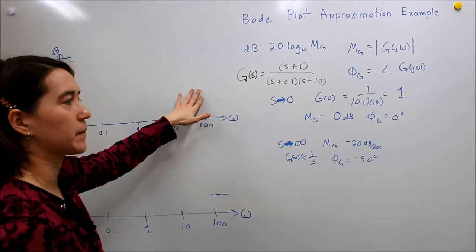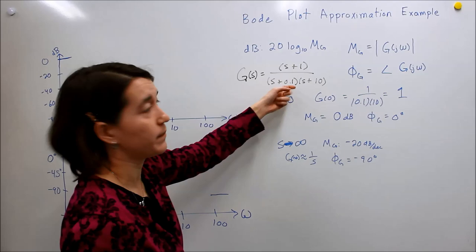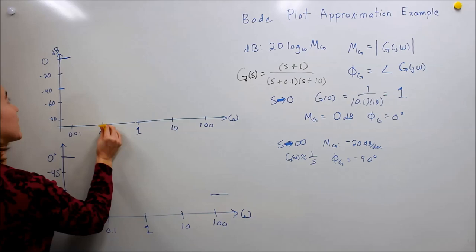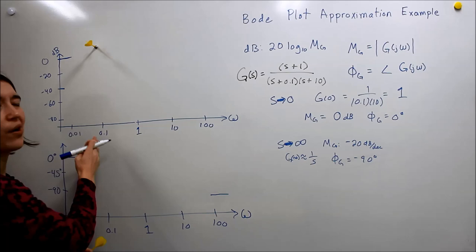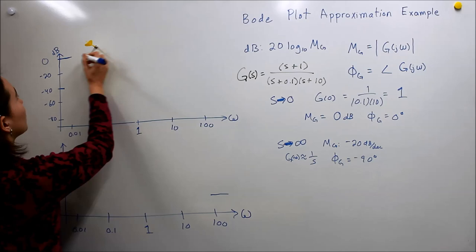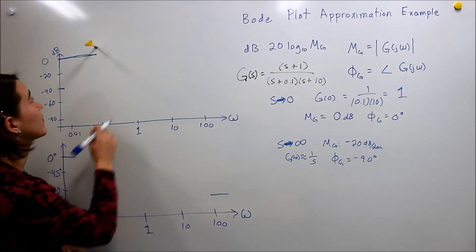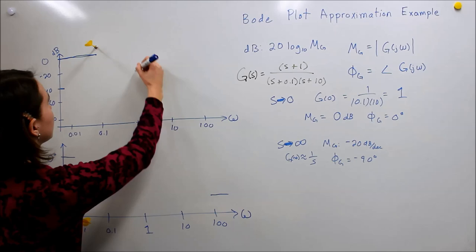Now let's look at what happens as we go through where these poles are located. The first one, the lowest value, is 0.1. So we have the pole effect here — the magnitude will start changing once it crosses this threshold. We approximate it as a straight line until then, and once it hits this first pole, it'll start to decrease at negative 20 dB per decade. So it decreases 20 dB over the next decade to this point.